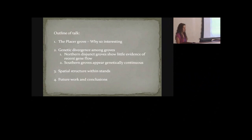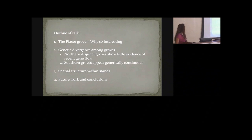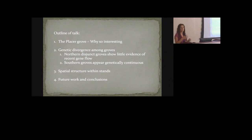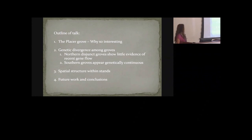Here's a quick outline of what I'm going to talk about today. First, I'll touch on Placer Grove, which is a really interesting grove. Then I'll discuss the difference between what's happening in the northern versus the southern section of the range. After that, I'll go deeper into fine-scale genetic structure within stands, and then talk about broad patterns and future work we're doing in our lab.